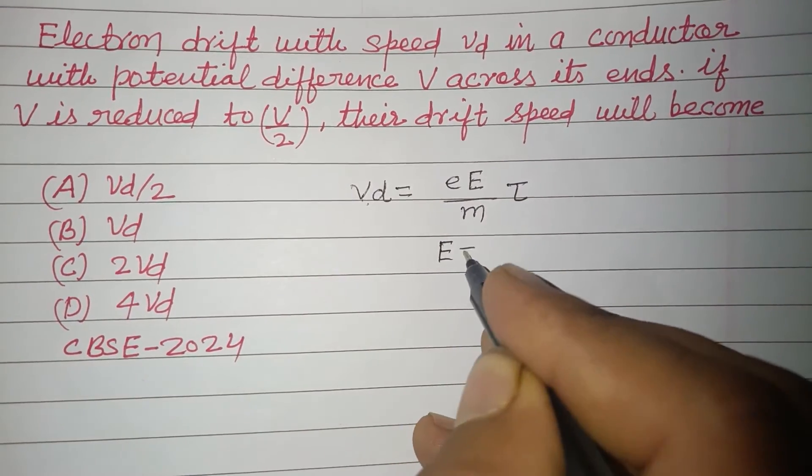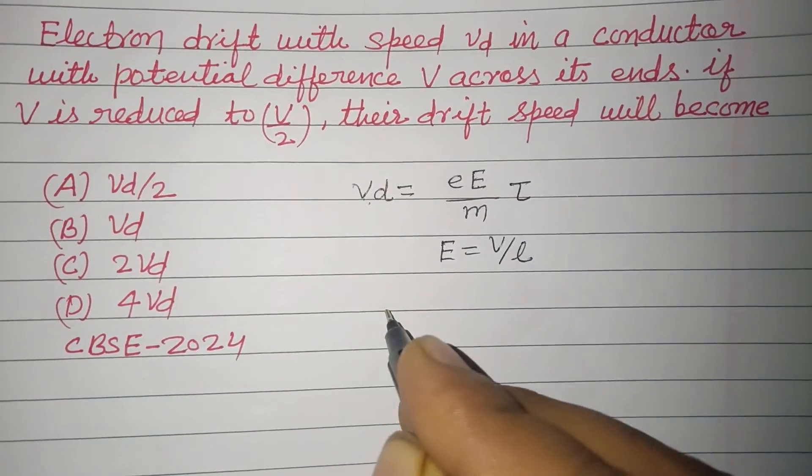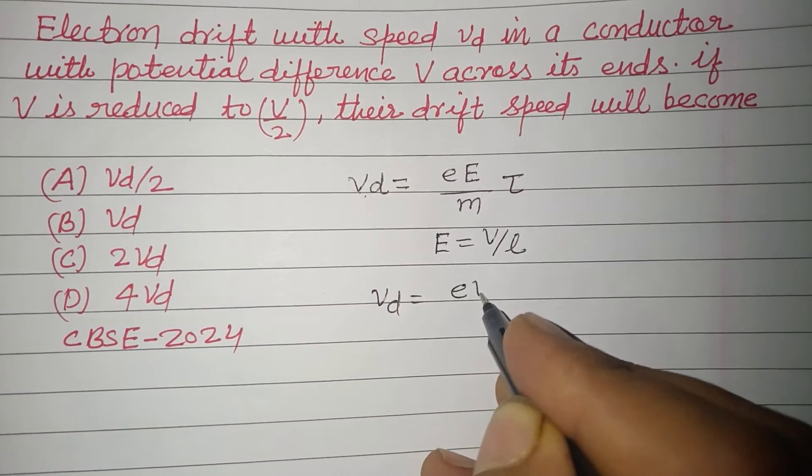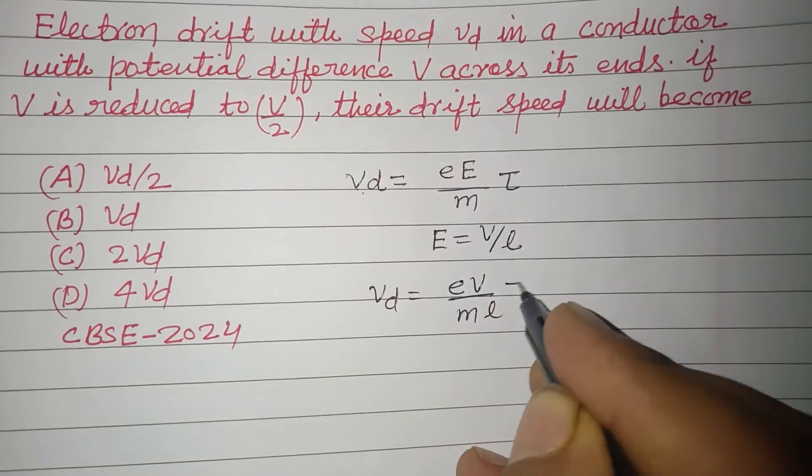You know that E equal to V over L. So putting VD equal to eV over mL into tau.